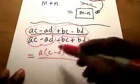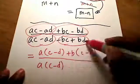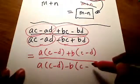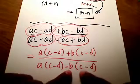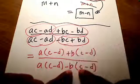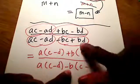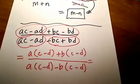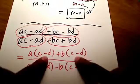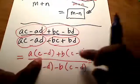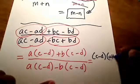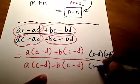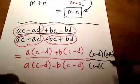Now let's group the terms in the denominator. The first two both have an A, leaving C minus D. The last two both have a negative B — negative B times C is negative BC, and negative B times negative D is positive BD — leaving C minus D. So we factored correctly. Now both terms in the numerator have C minus D in common — that's factor by grouping. Taking it out leaves A plus B. In the denominator, likewise taking out C minus D leaves A minus B.